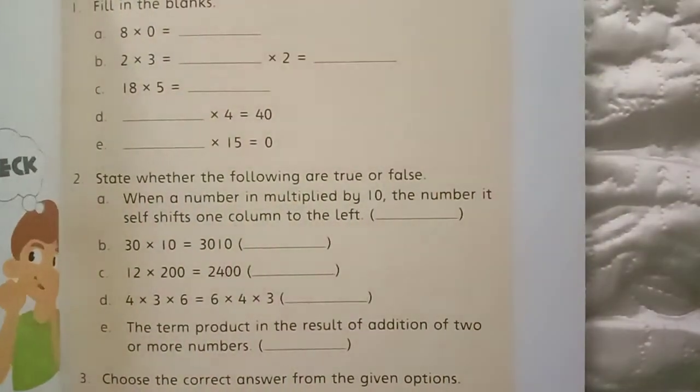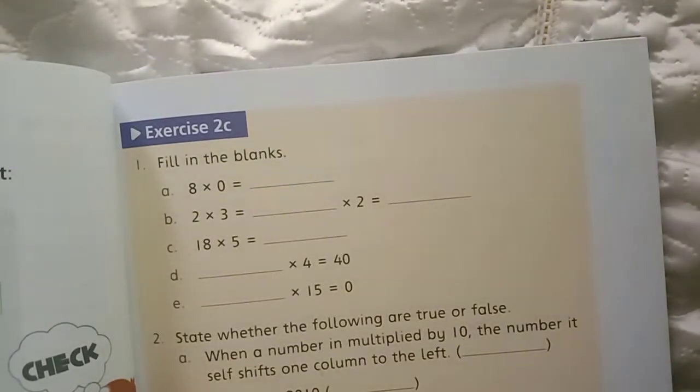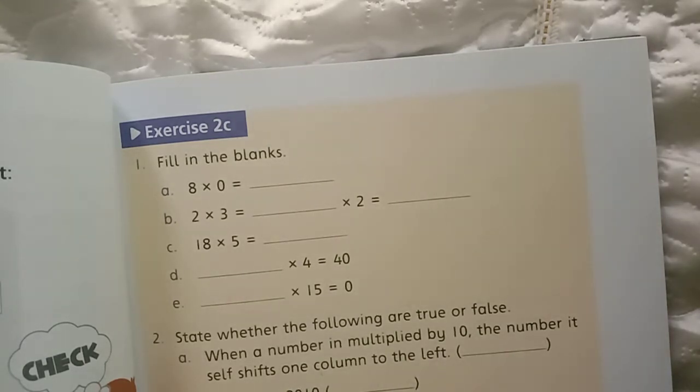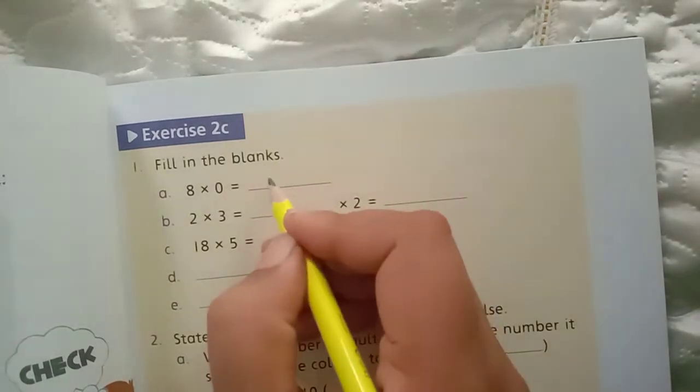Open page number 69. This is exercise 2C. Question number 1 is fill in the blanks. A is given as 8×0. When we multiply any number by 0, we get 0. So 8×0 is 0.